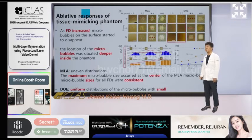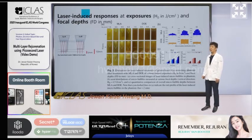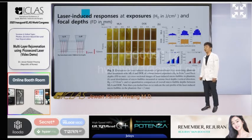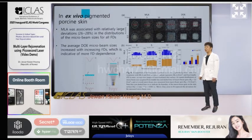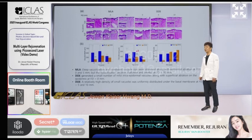Similar results were also observed in tissue phantom. When looking at the side view of the tissue phantom, MLA shows a V-shape — a Gaussian pattern — and DOE shows a constant penetration depth. Even in the top view of ex vivo porcine skin, the DOE shows a bulk beam pattern as focal depth increases. On histological examination, MLA showed cavitation of different sizes and depths, and DOE shows relatively homogeneous cavitation.